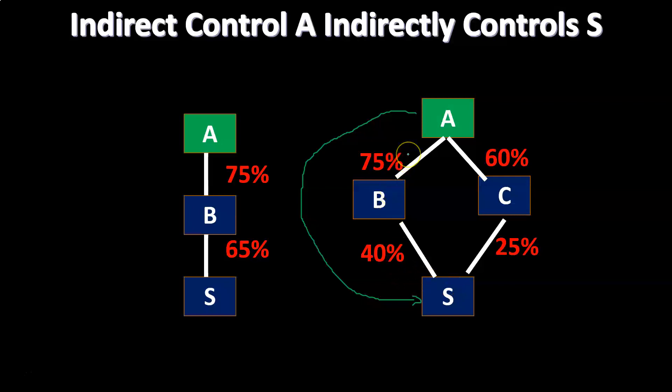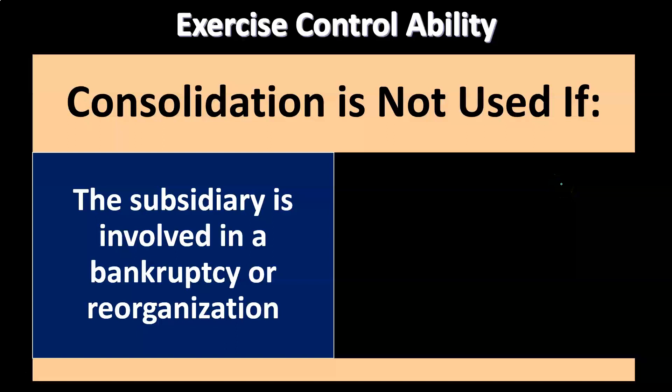Since A can essentially direct B and C — having a controlling interest in both — and B plus C together own over 51 percent of S, it looks very much like A can tell S what to do, meaning A effectively has indirect control over S in that situation. You can imagine even more complex corporate structures beyond this, showing how control exercisability is key to evaluating these arrangements.